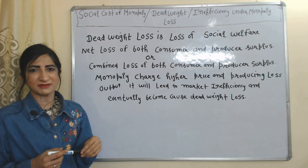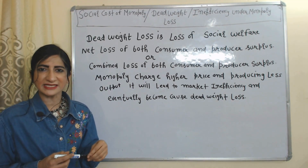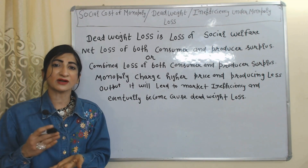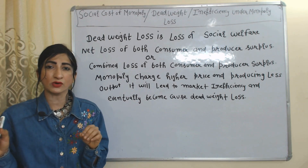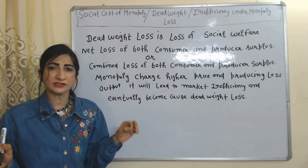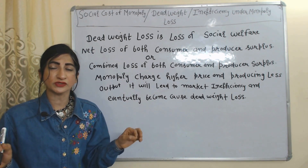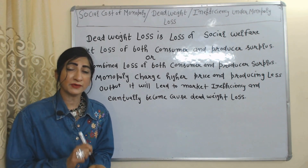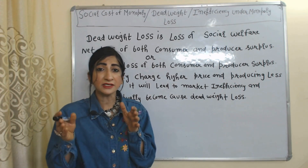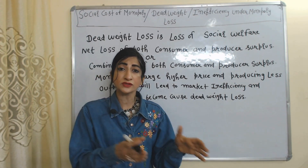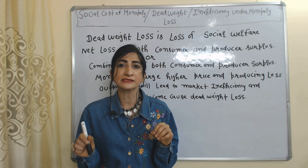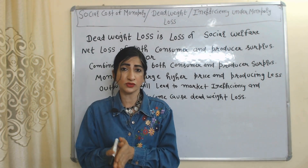Hello everyone, my name is Manis Sati. I hope you all are staying healthy. Today we are going to talk about deadweight loss in case of monopoly. Deadweight loss is loss of social welfare — the net loss of consumer and producer surplus, or we can say the combined loss of consumer and producer surplus.